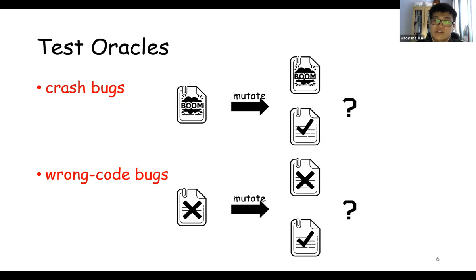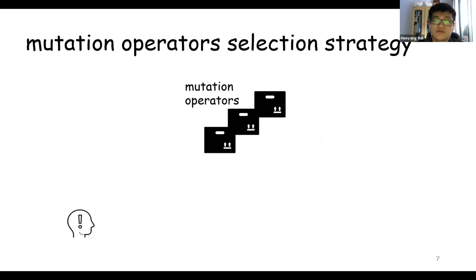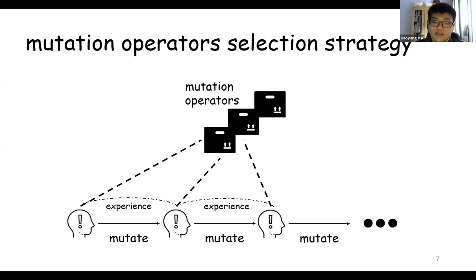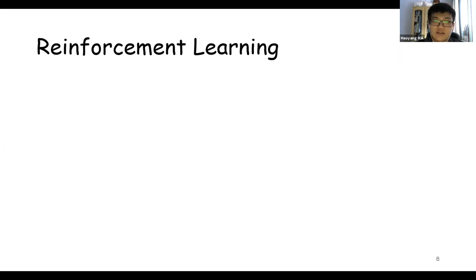Now we have a complete test oracle and some mutation strategies, and we should know that not all operators are suitable for one specific situation. So how to choose it? Now comes our mutation operator selection strategy. Suppose we have a thinker who can randomly select one operator at the first round, and then he mutates the bug trigger program and goes into the next round. In the next round, he can draw some experience from the first round and select the operator with more consideration. The same things happen until he reaches the one hour limit. During this process, the thinker can select the operator more sensibly.